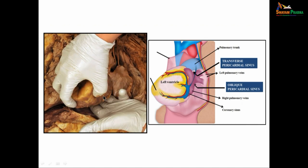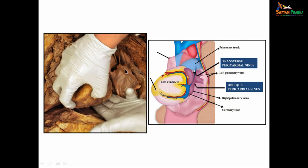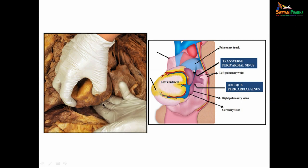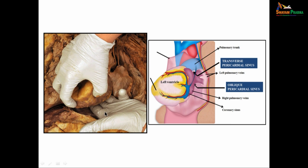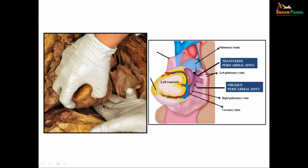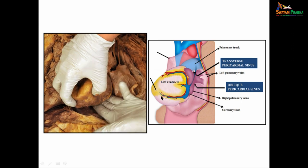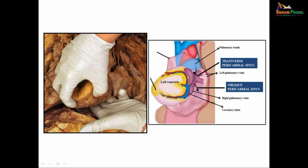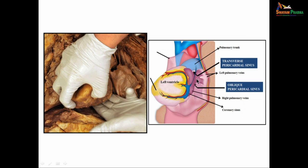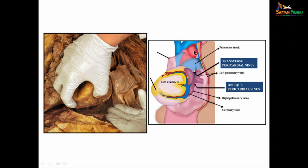Looking at this picture again: this is the pericardium which has been cut open, this is the heart. If you insert a finger just behind this heart, you are actually into the oblique pericardial sinus. You can compare these two pictures. This is the left ventricle, coronary sinus, the pulmonary veins, atrium, pulmonary trunk, then the aorta and the vena cava.